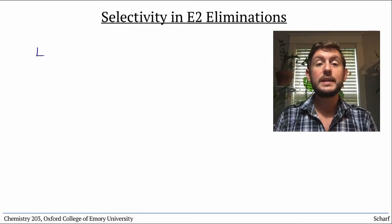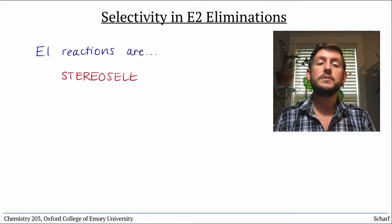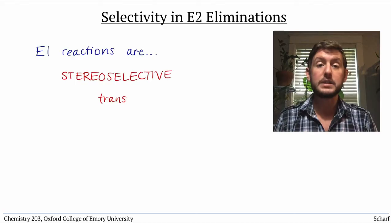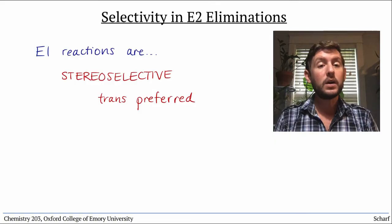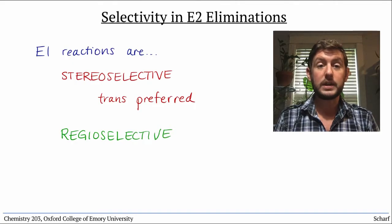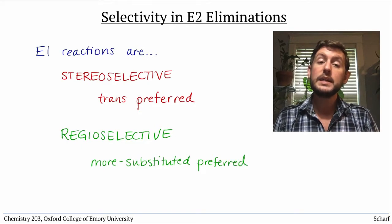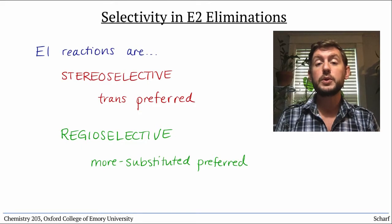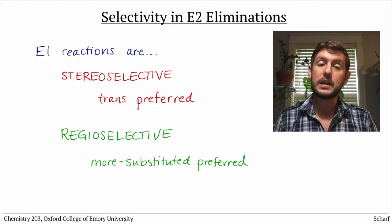In the last class, we learned that E1 eliminations are stereoselective, because they tend to favor one stereoisomer over another. Trans alkenes are generally favored over cis alkenes. We also learned that it was regioselective, because if different hydrogens adjacent to a carbocation lead to different alkene products, the more stable, more substituted double bond forms preferentially. The E2 elimination also tends to favor the production of the most stable product — the most substituted E-alkene — when there's a choice.